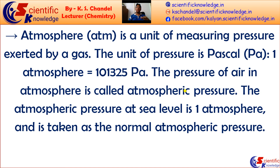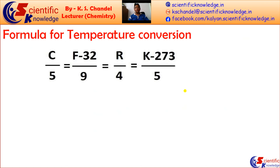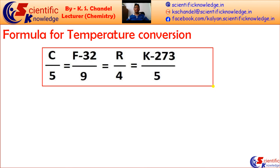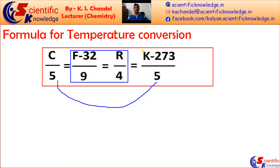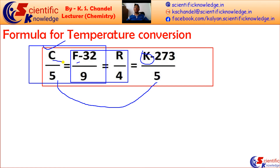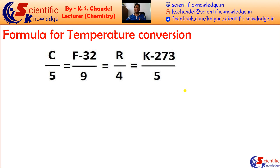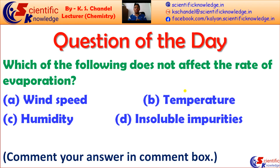Temperature conversion formula: to convert from degrees Celsius to Kelvin, add 273 to the given temperature. To convert from Kelvin to degrees Celsius, subtract 273 from the given temperature. This is the formula to convert between temperature scales.